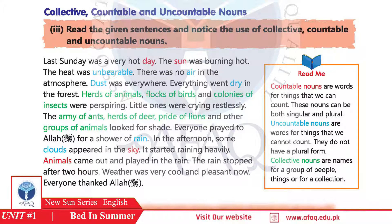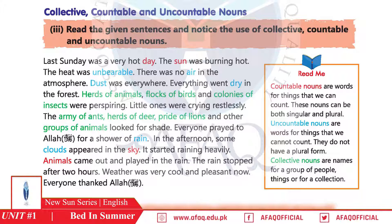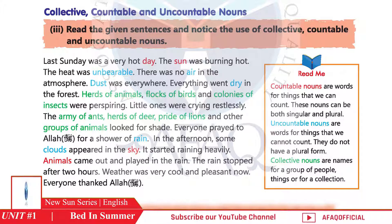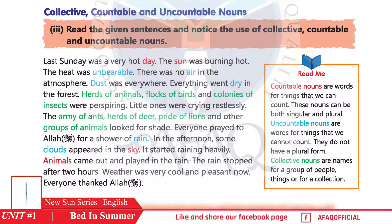'Everyone prayed to Allah Subhanahu wa Ta'ala for a shower of rain.' Rain is an uncountable noun. 'In the afternoon some clouds appeared in the sky.' Sky is a countable noun. 'It started raining heavily. Animals came out and played in the rain.' Animals is a countable noun. 'The rain stopped after two hours. The weather was very cool and pleasant. Everyone thanked Allah Subhanahu wa Ta'ala.'